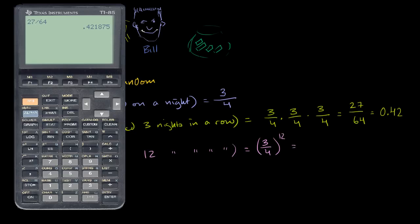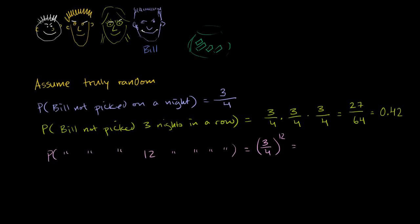What is three-fourths to the 12th power equal to? Well, three-fourths is 0.75, so we take 0.75 to the 12th power. This is a much smaller number — it comes out to approximately 0.032, which is equal to about 3.2%. So now you have every right to start thinking that something is fishy.